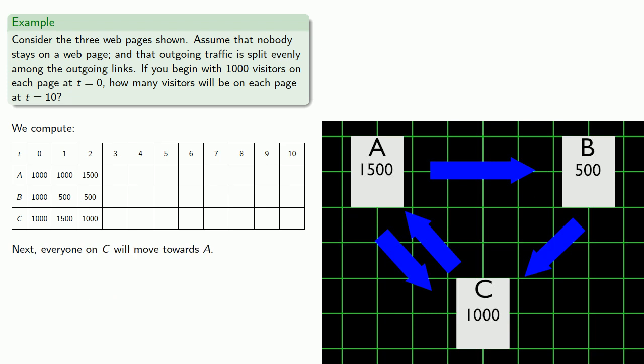We'll continue the process. Everyone on C will move towards A. Half the people on A will move towards B. And the other half, and all of those on B, will move towards C. And when they arrive, A has 1,000, B has 750, and C has 1,250.